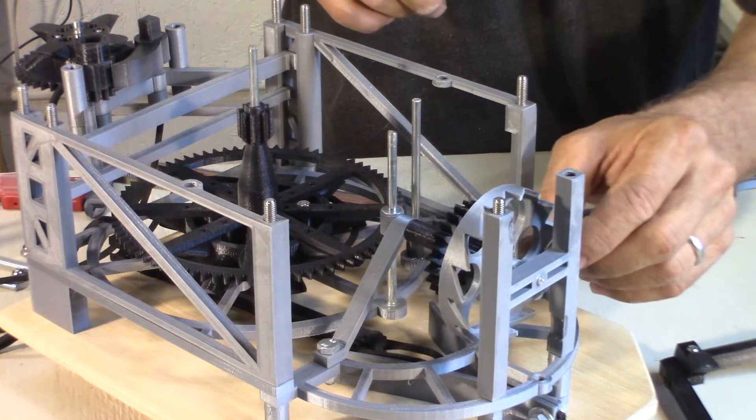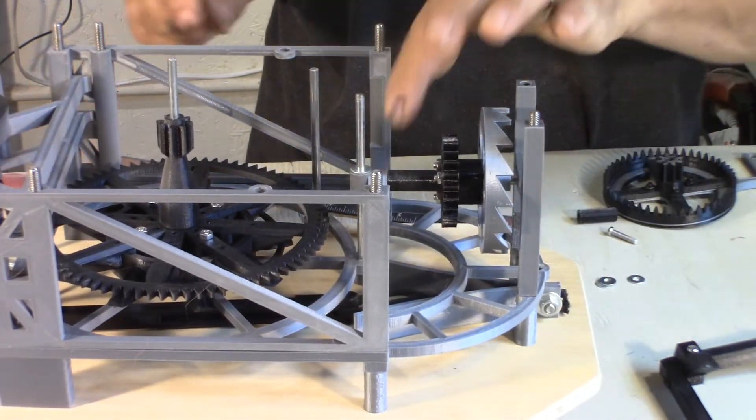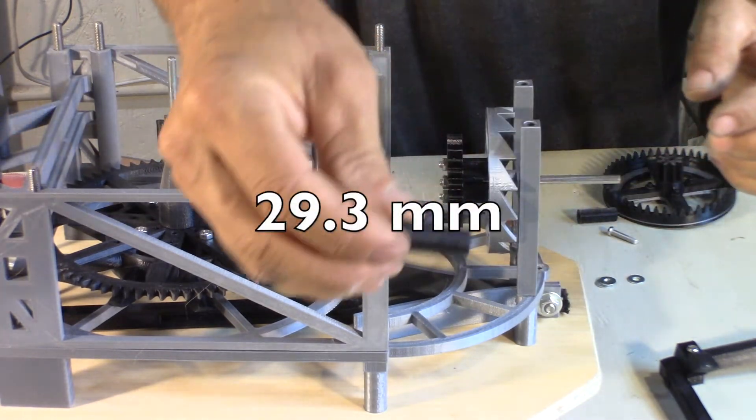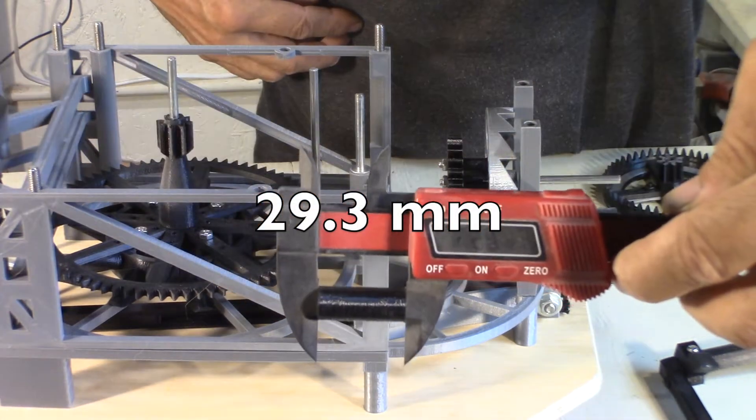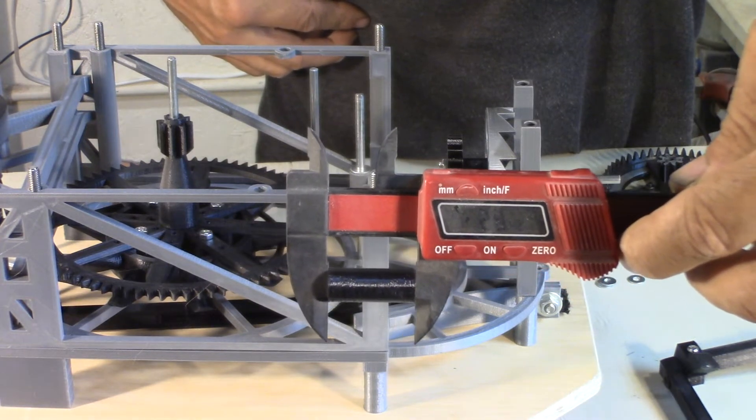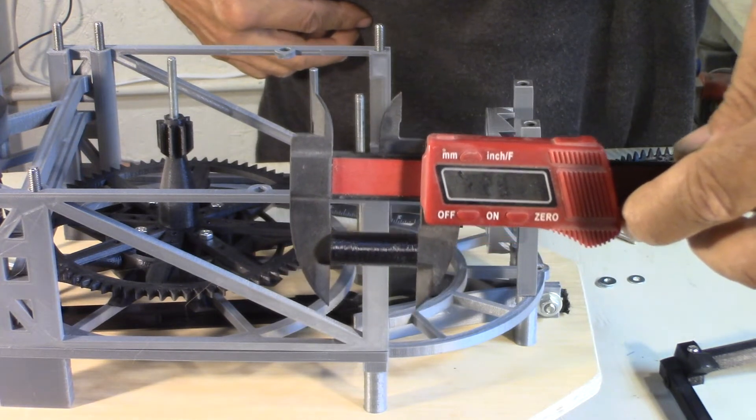So the position of the anchor here is given by this bushing here, this bushing here. When you go into your slicer setting, you can scale it up or down to make it a little bit longer or shorter.